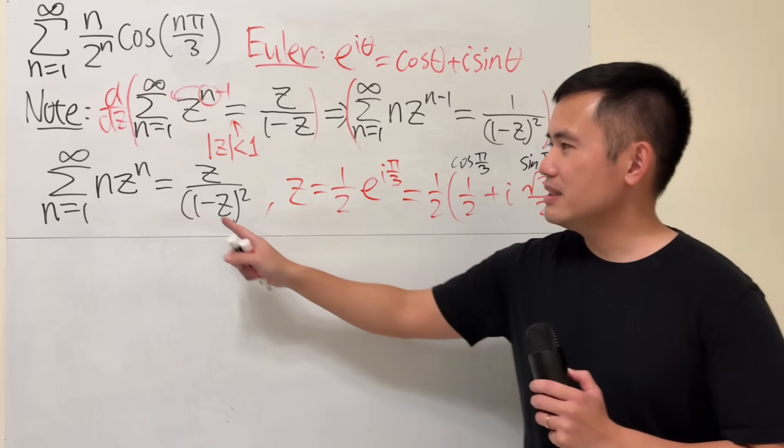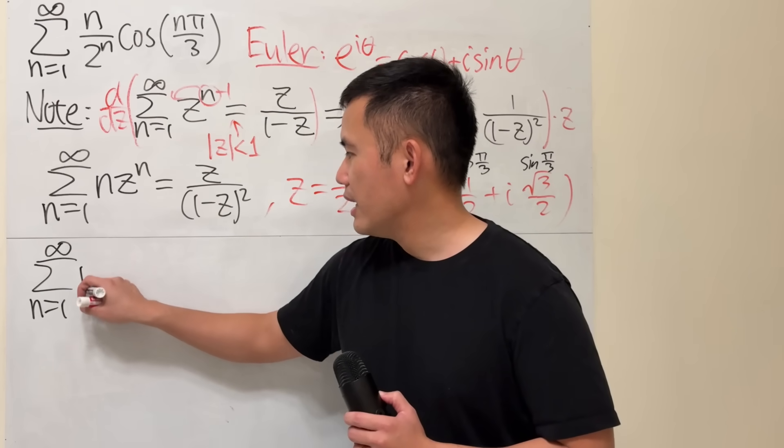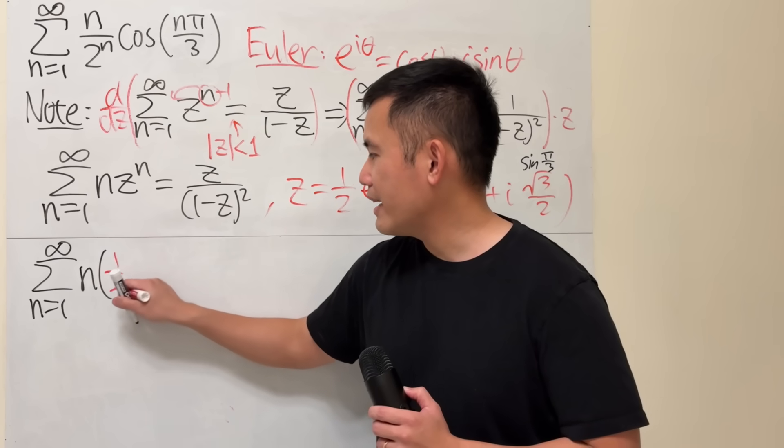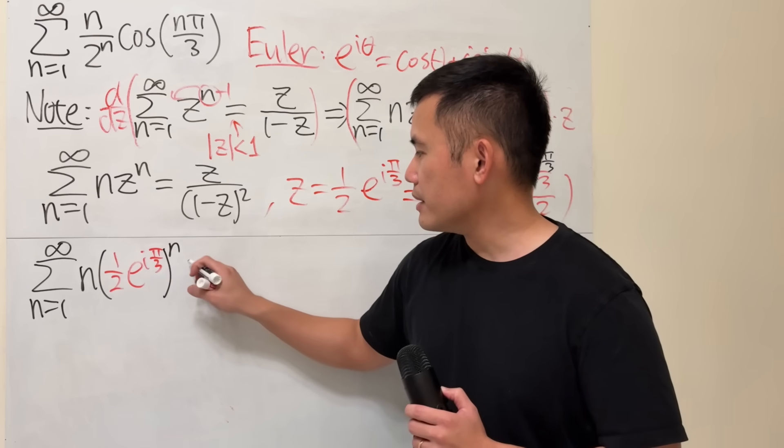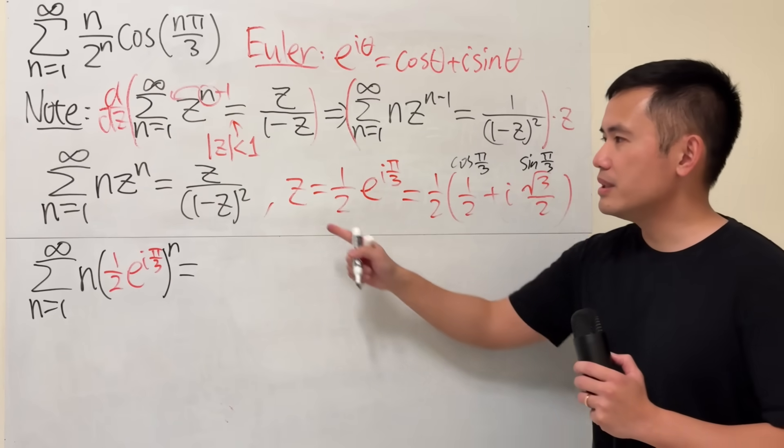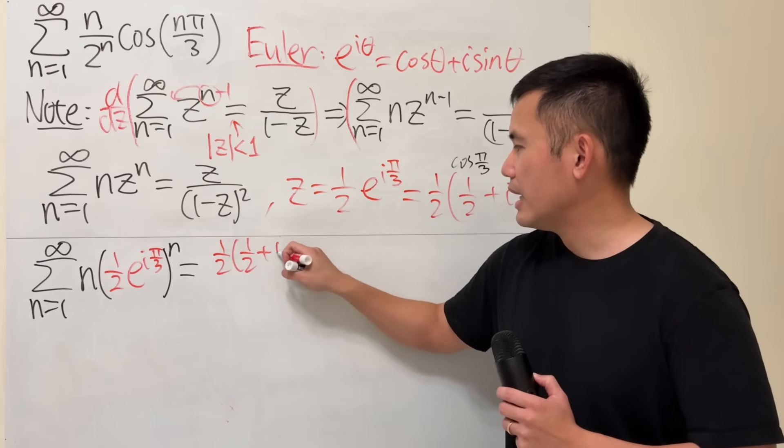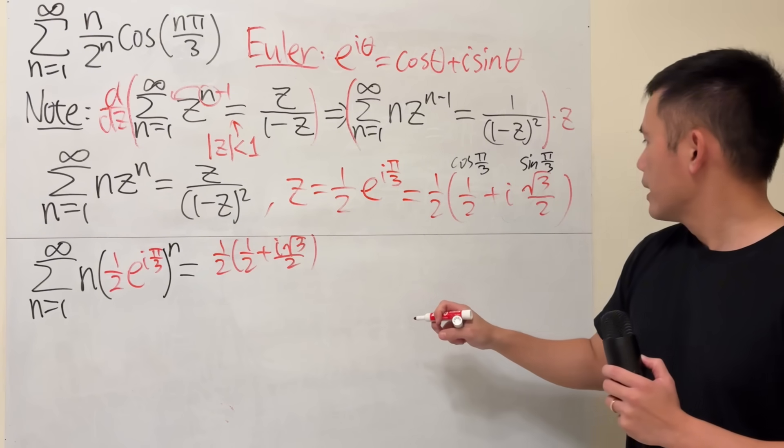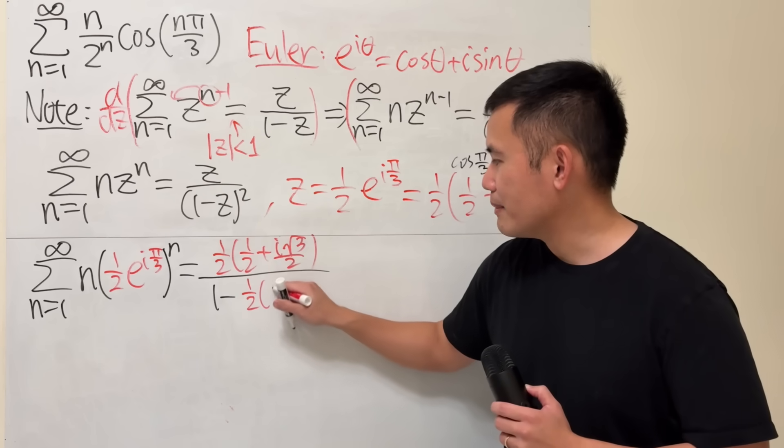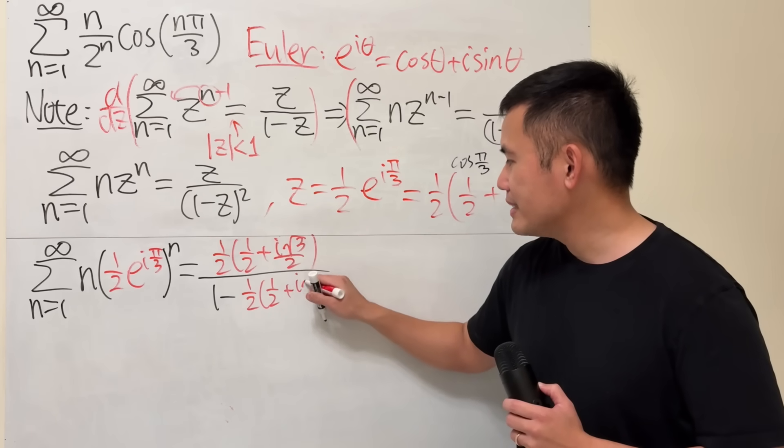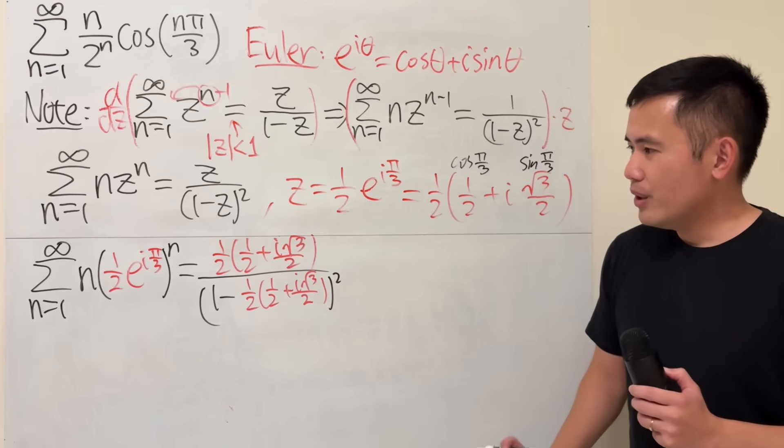Now I will plug this in. We get the series as n going from 1 to infinity, n times 1 half e to the i pi over 3 to the n. This equals, plugging all this in, 1 half times 1 half plus i square root of 3 over 2, over 1 minus 1 half times 1 half plus i square root of 3 over 2, and then square.